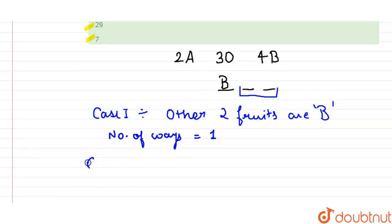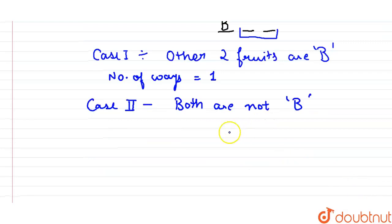Then our Case 2: When both are not bananas. So when both are not banana, there will also be two cases that arise.